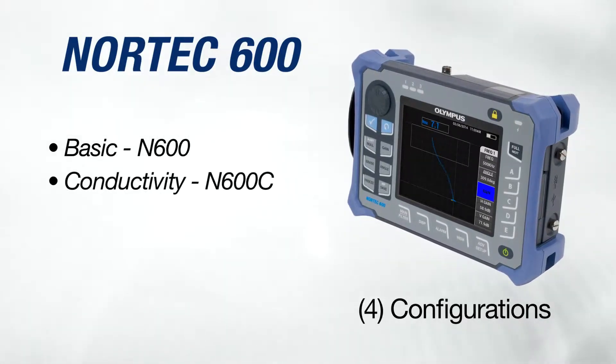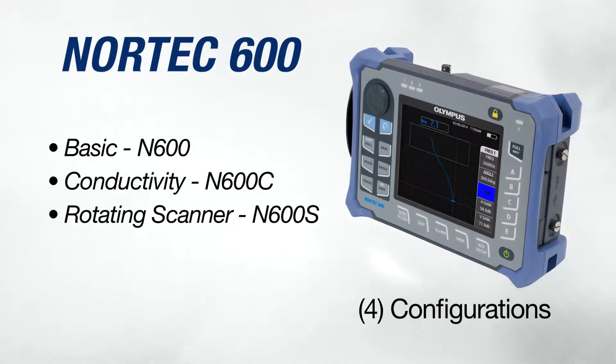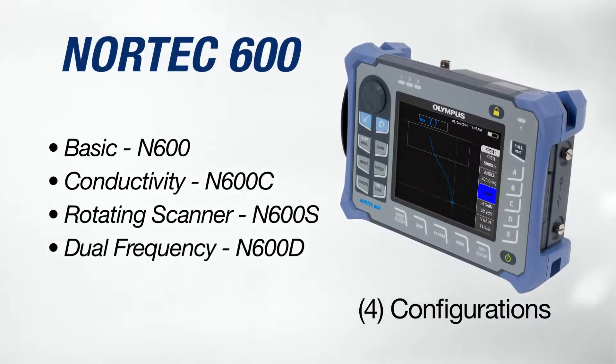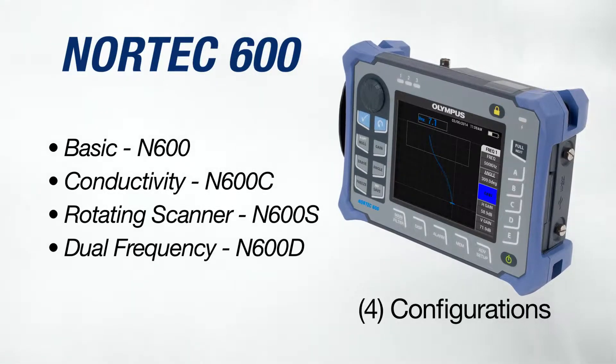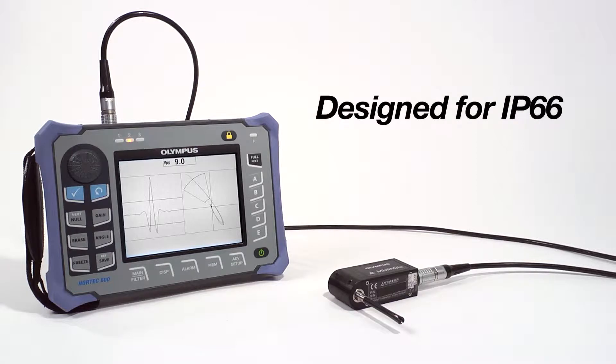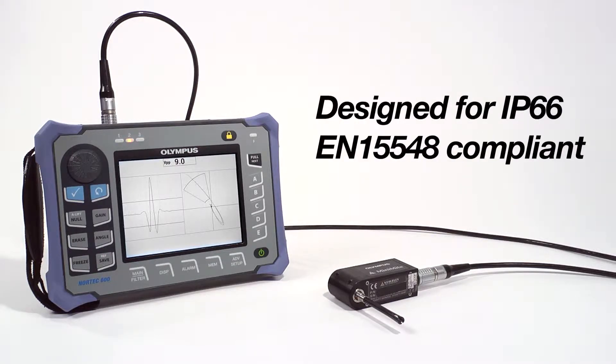The Nortec 600 comes in four models to suit any need. From its basic conductivity, rotating scanner or dual-frequency configuration, the Nortec 600 is packed with innovative and exciting features to solve all common applications. The instrument is designed to meet the requirements of IP66 and is also EN15548 compliant.